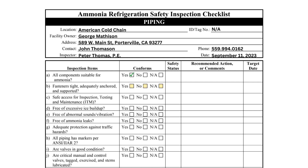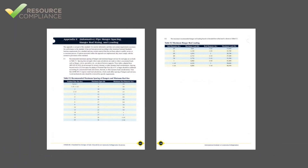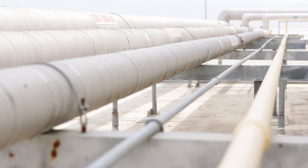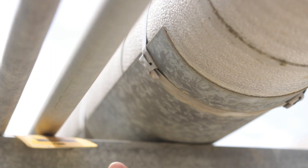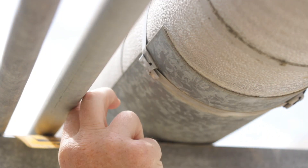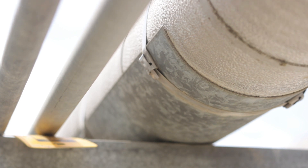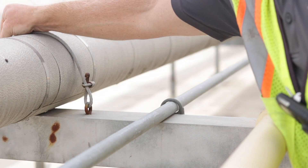Item B requires the inspector to verify that pipe fasteners are tight and adequately supported. Appendix F in the 2021 edition of Standard 2 has a table with recommended spacing of pipe supports based on the pipe diameter. Additionally, the 2019 edition of the IIAR refrigeration piping handbook suggests that pipes be fastened to every two or three supports. U-bolts and strut clamps are commonly used fasteners.